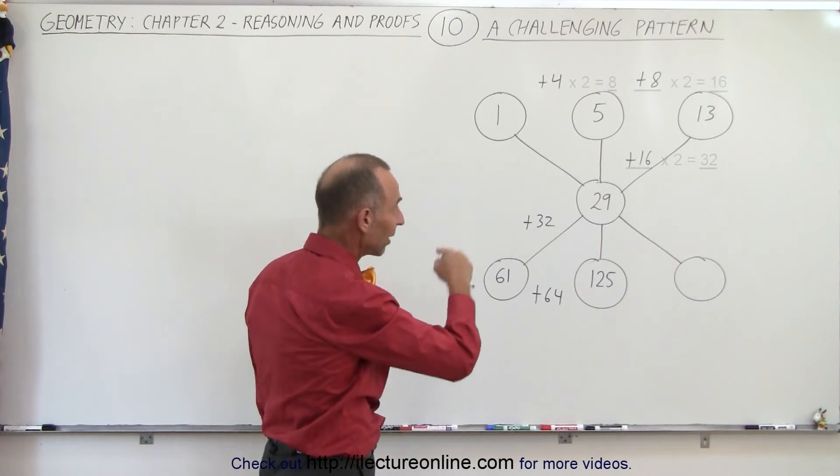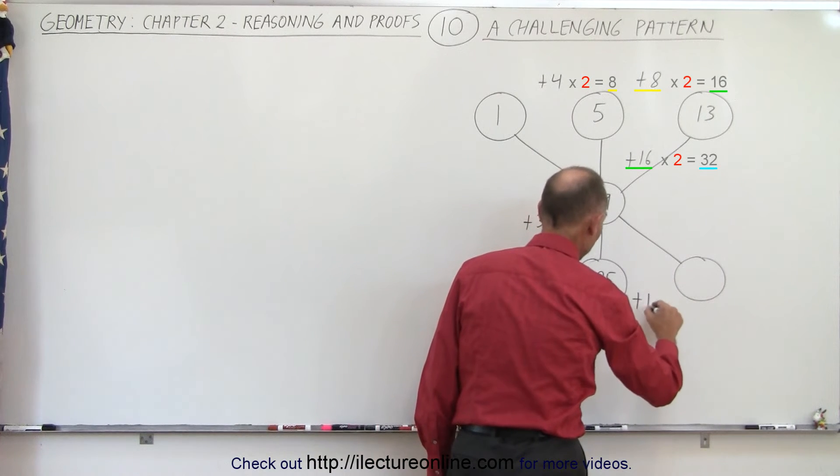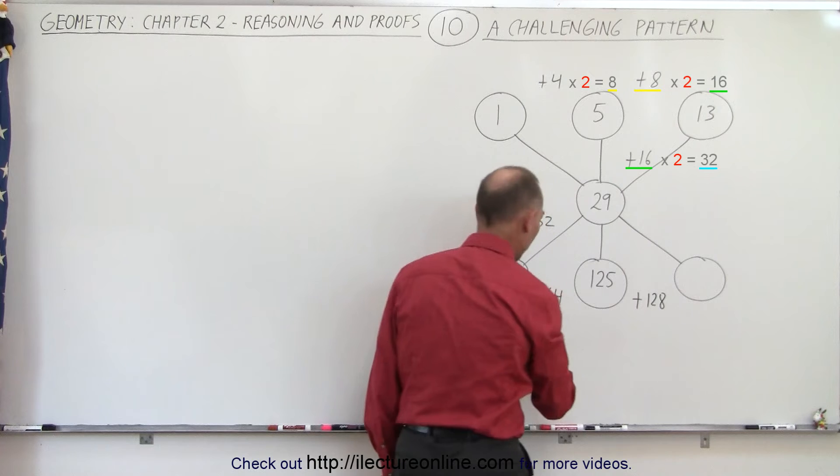Well, it looks like each time I add a number, it doubles from what I'm adding before. So I would assume that here, I'm adding plus 128. That's double 64.